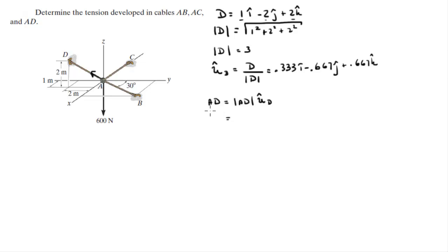Which means that the Cartesian form of this vector is AD times 0.333 in the i minus AD times 0.667 in the j plus AD times 0.667 in the k. The other two are fairly easy to find. We're given an angle and this one's going straight in the negative x direction.